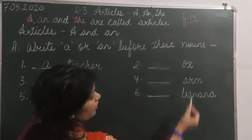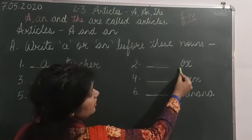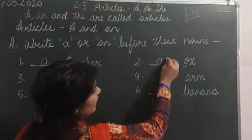Now number 2 is ox. Ox, this is a vowel sound. So what we will write here, we will write AN.